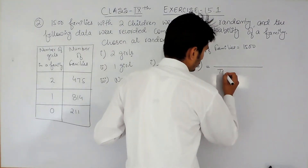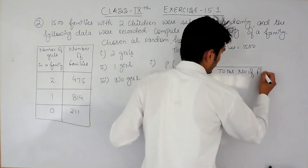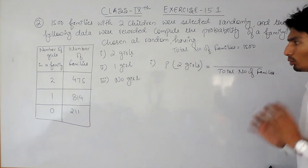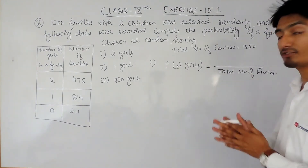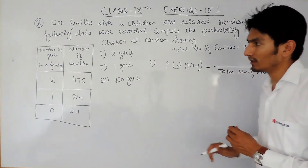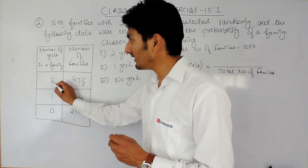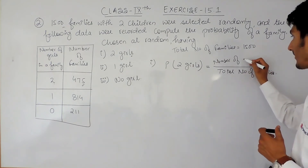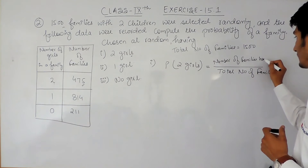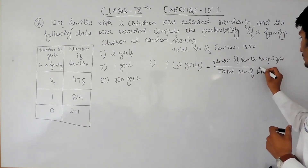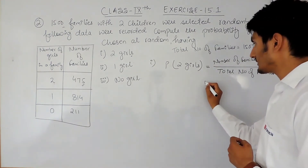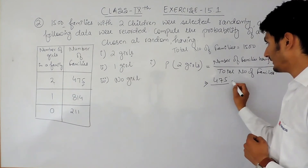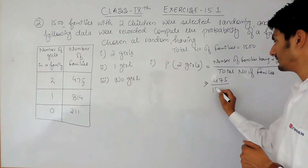So here in the numerator will be the number of families in which this event has occurred — that is, the number of families having two girls, which is 475 — and in the denominator the total number of families, which is 1500.